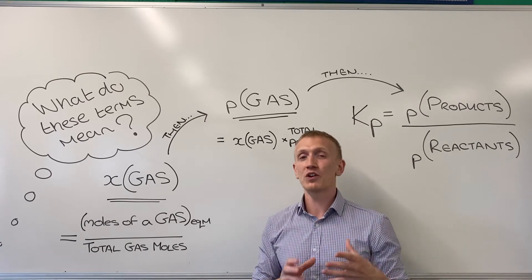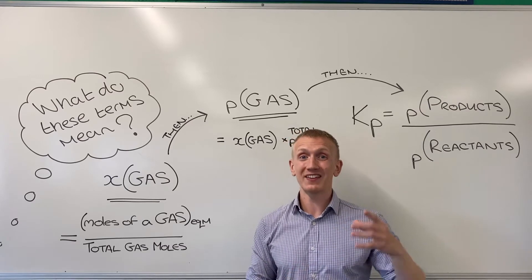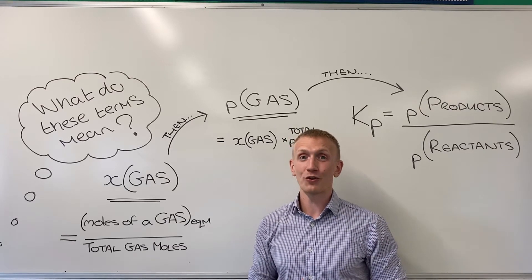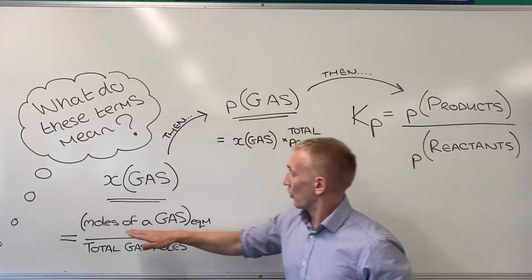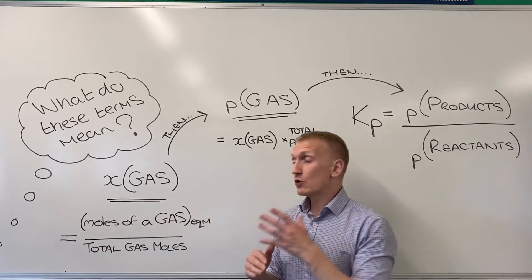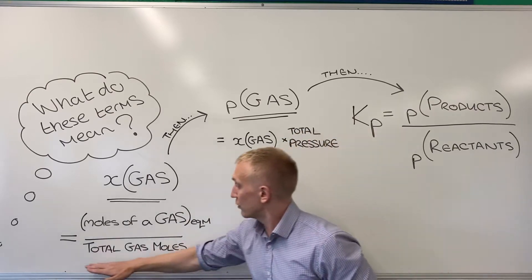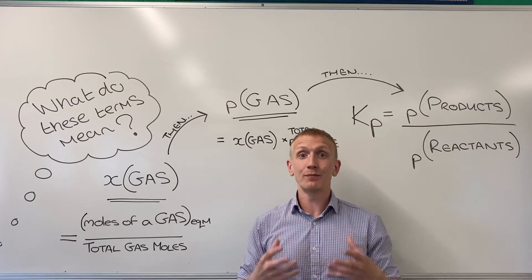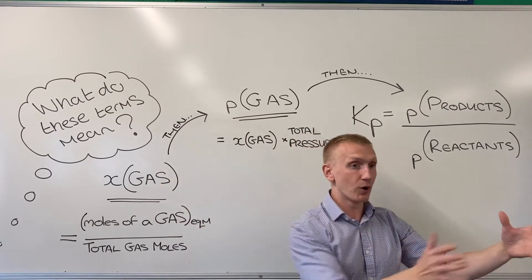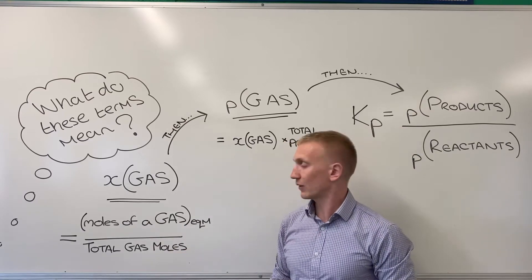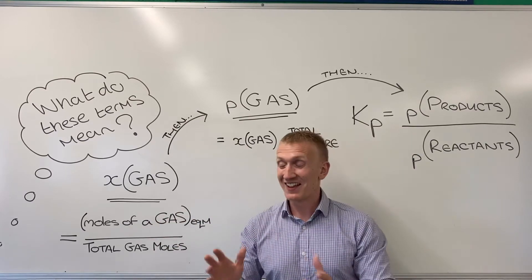There's a quick tutorial video on that if you want to have a look at that before going any further. You can either find that at the end of this video or check the cards by clicking the little i to the top right hand corner. Once you've got the individual equilibrium moles of the gas component that you're after, you then need to divide that by the total gas moles. So find out the moles of everything at equilibrium, add them all up, that's your total gas mole value.